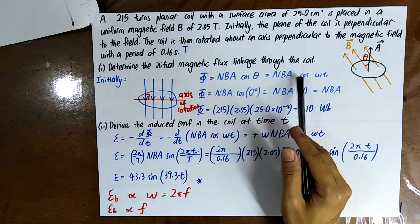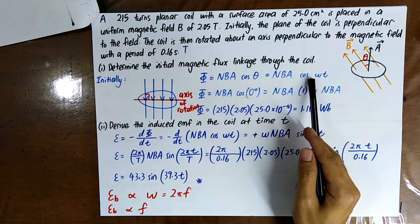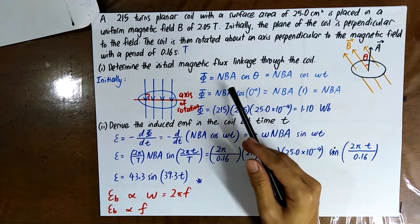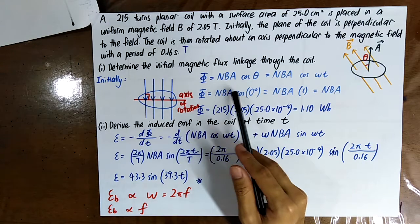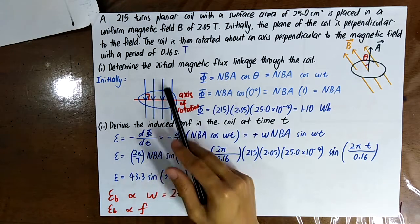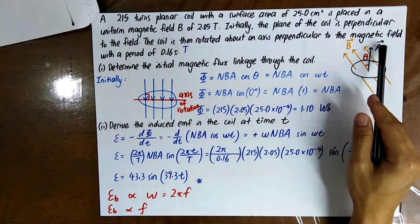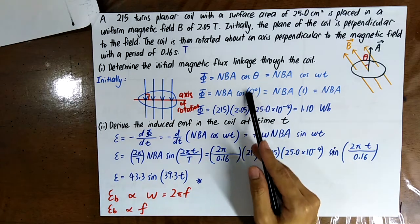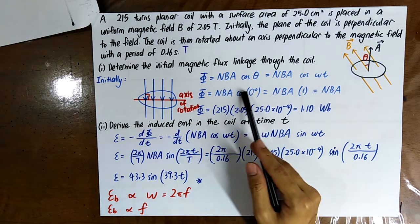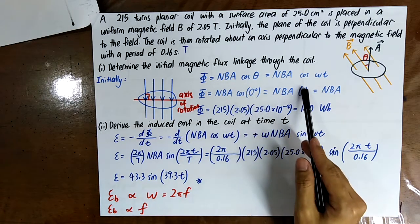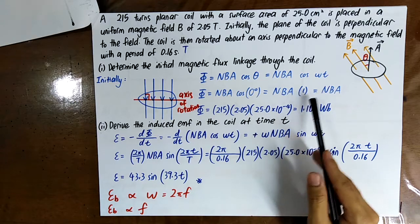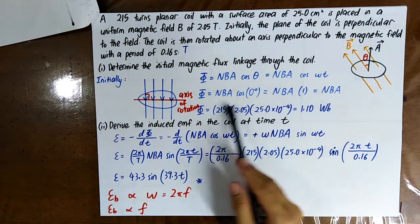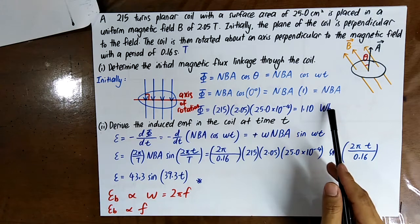θ equals ωt, where ω is the angular velocity. Initially, B and the area vector are parallel, so the angle is 0. cos(0) = 1, so φ = NBA. Then you can get φ equal to 1.1 Weber.